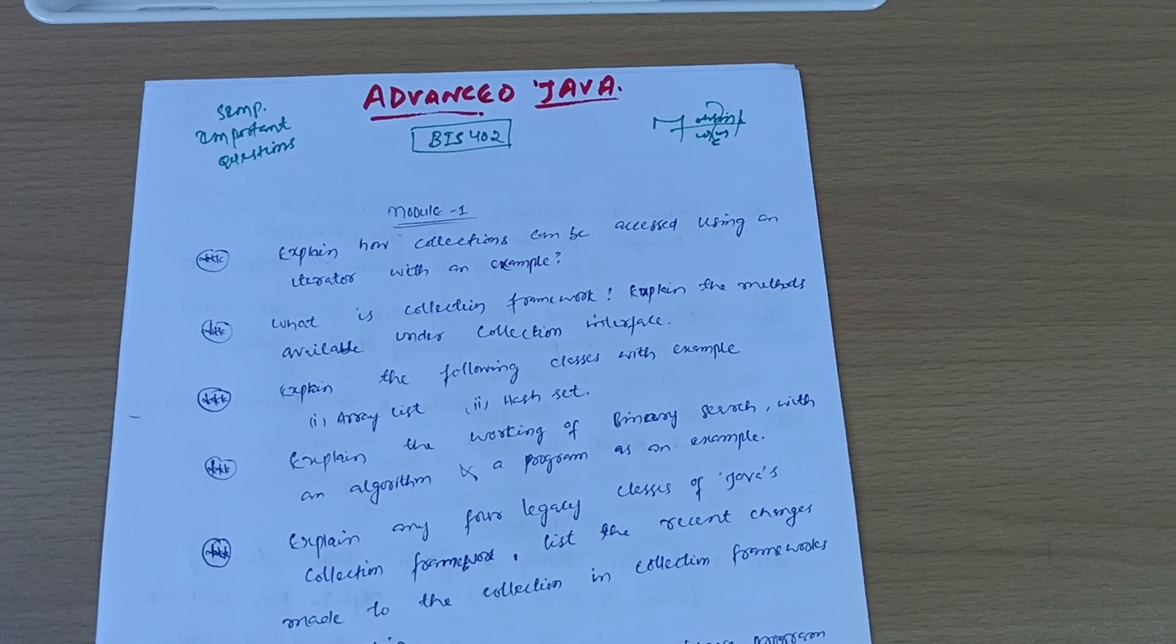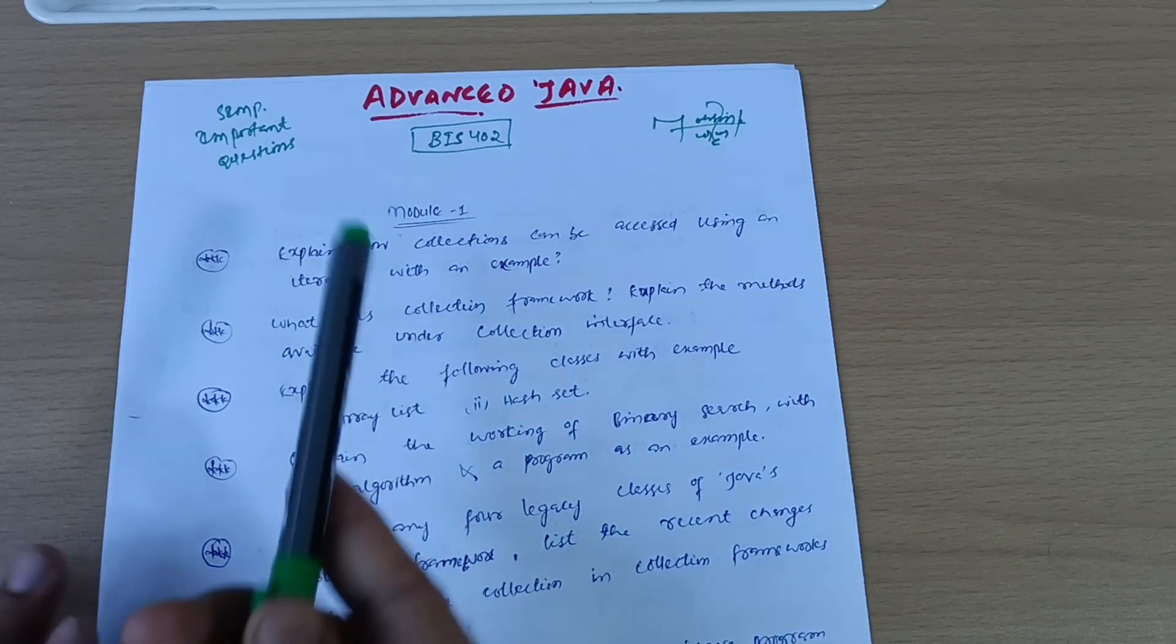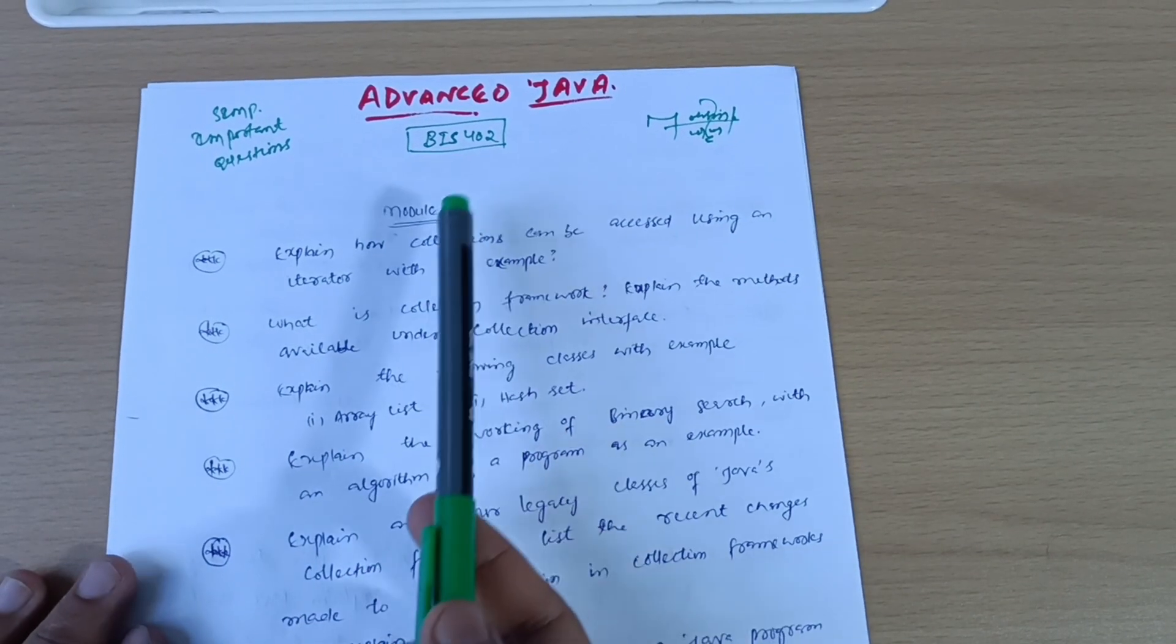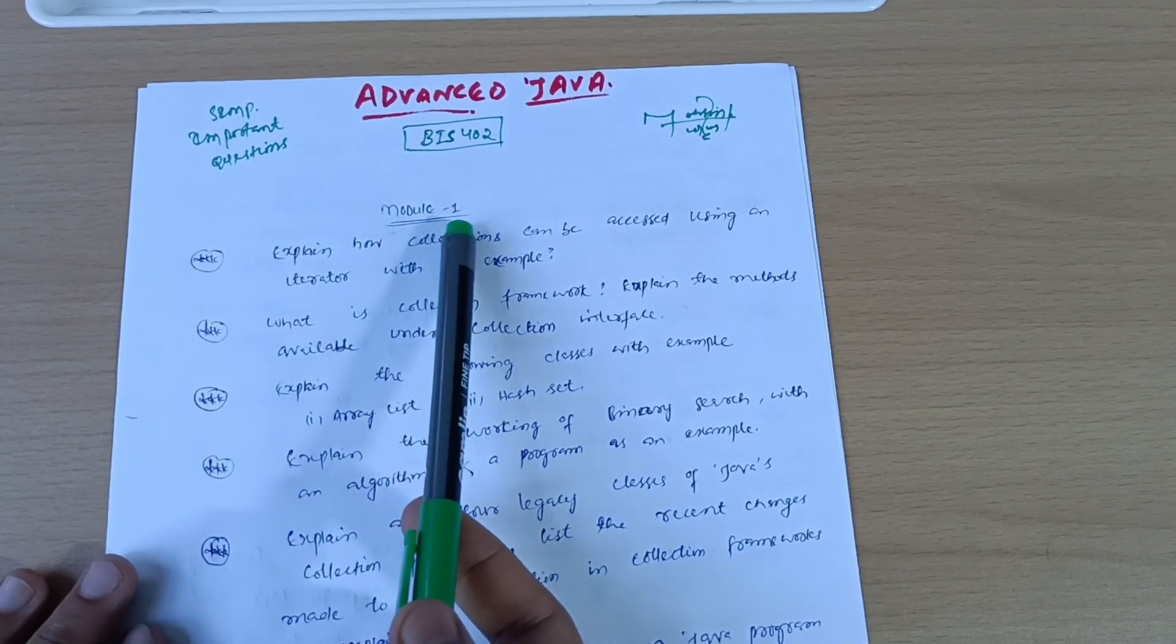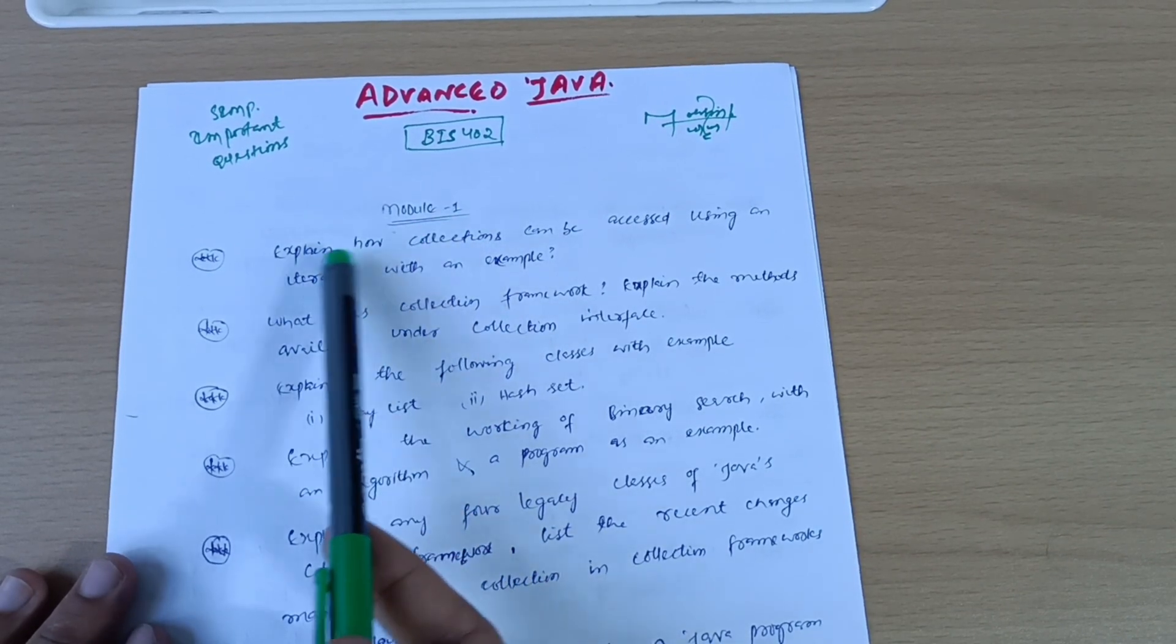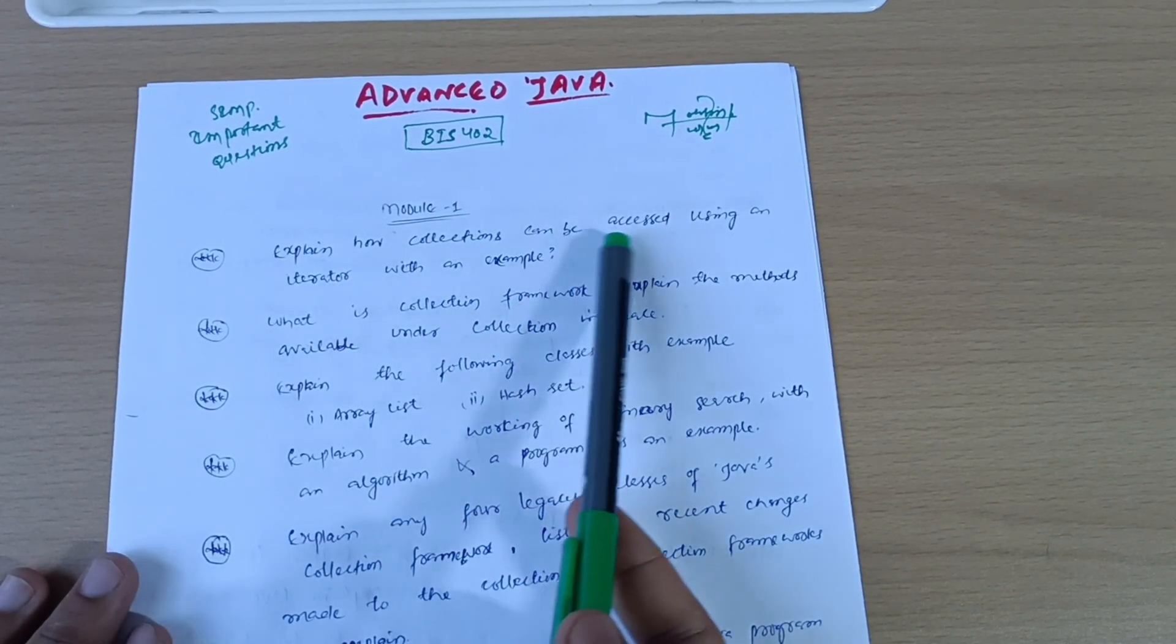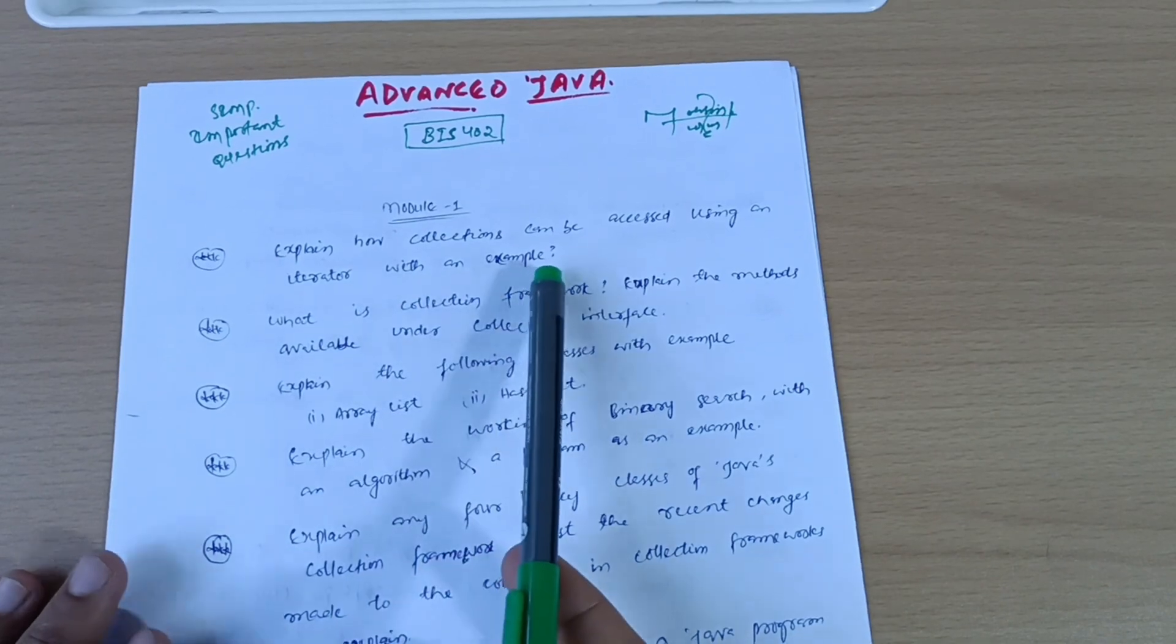So let me discuss here module-wise super important questions. Subject code is BIS402. Without wasting any time, I will start from module first. Explain how collections can be accessible using an iterator with an example.